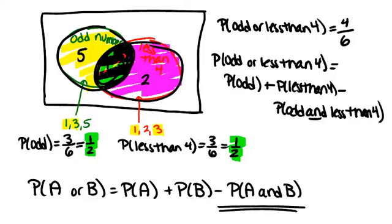Keep in mind, this will work whether or not the events are mutually inclusive or mutually exclusive, because if the events could never occur at the same time, this probability over here would just be 0, and you'd be left with simply the sum of the two individual probabilities.